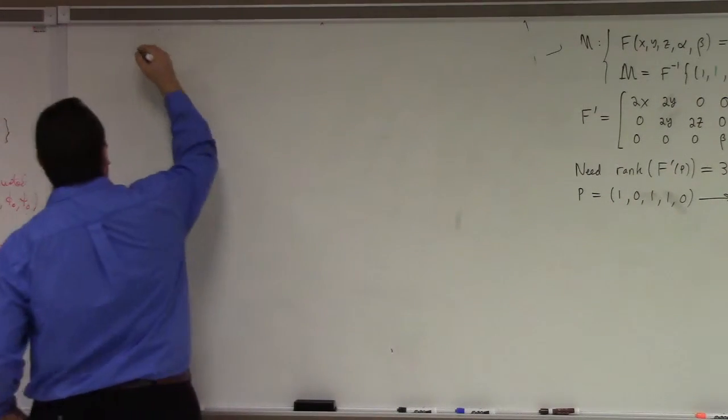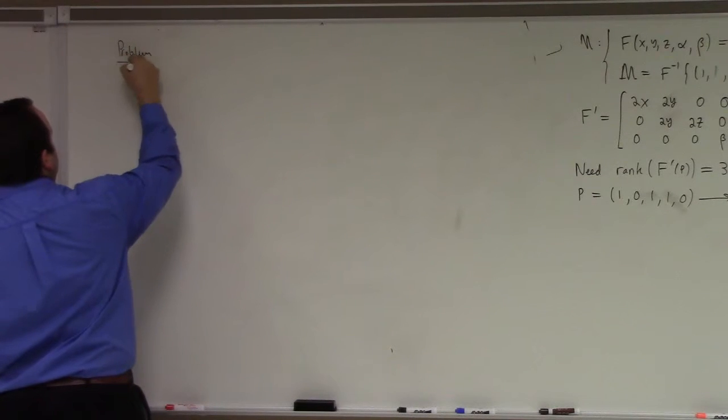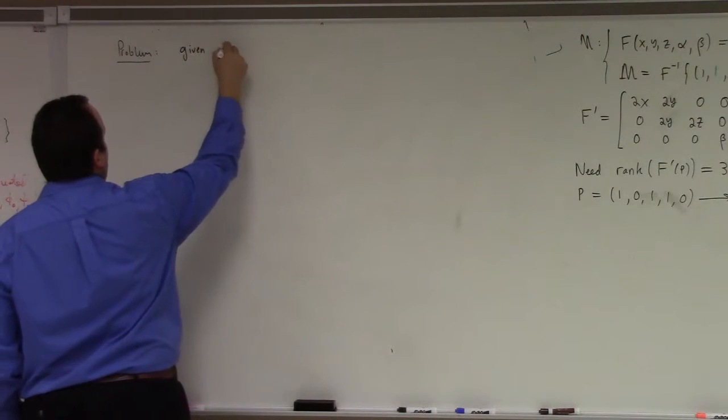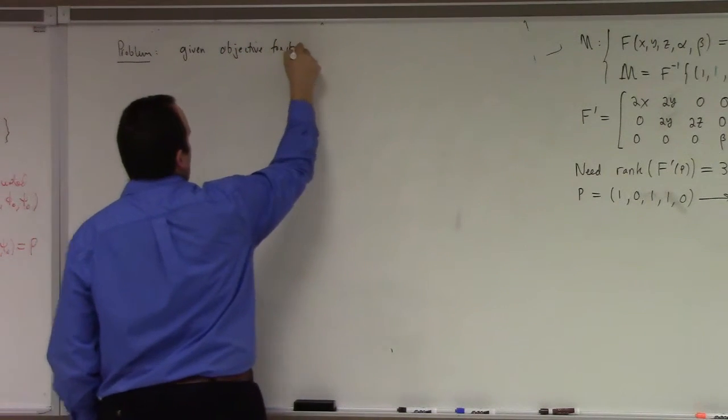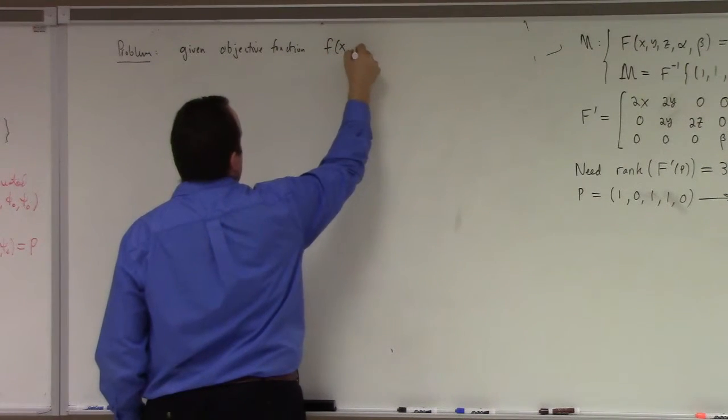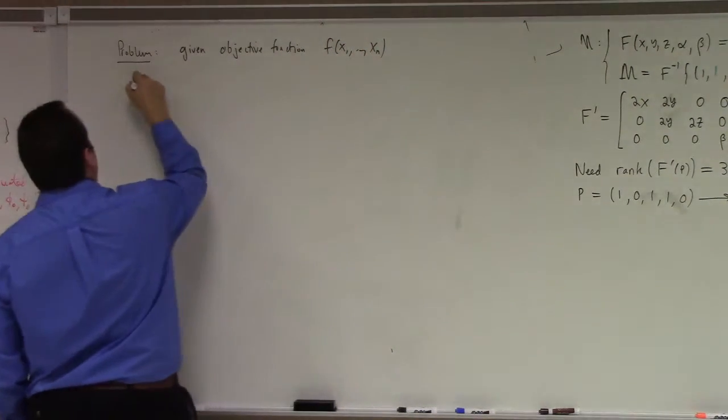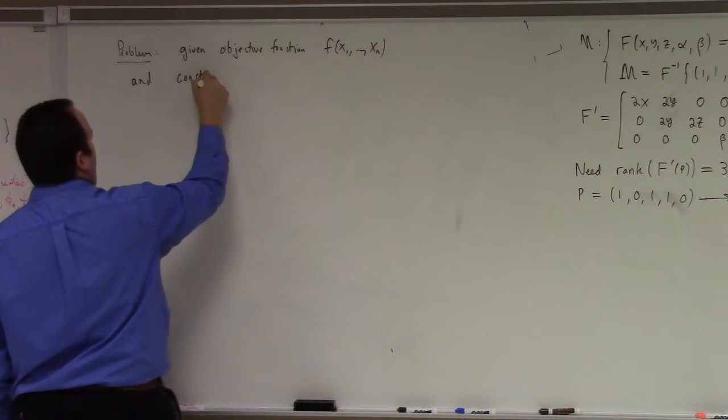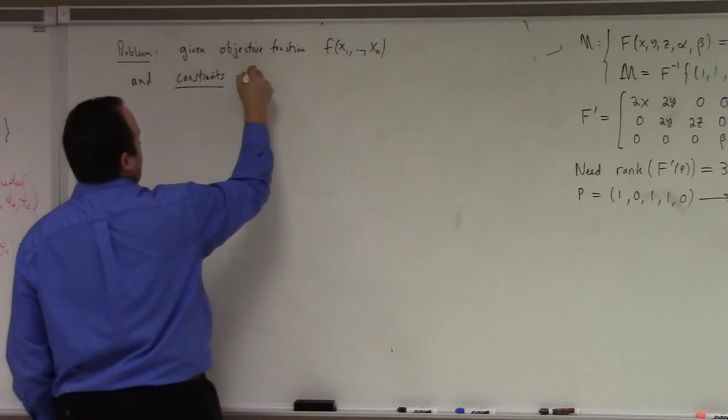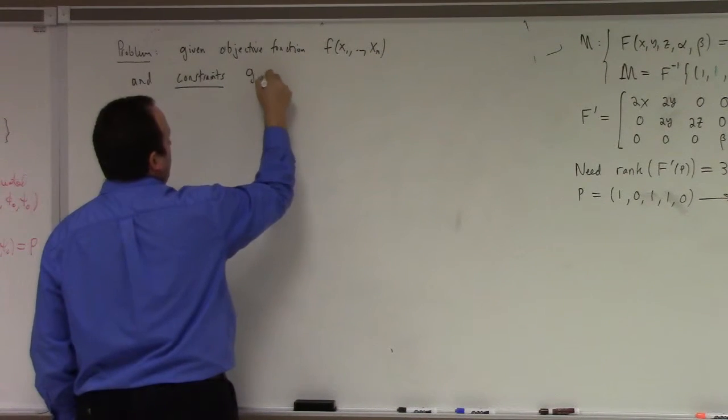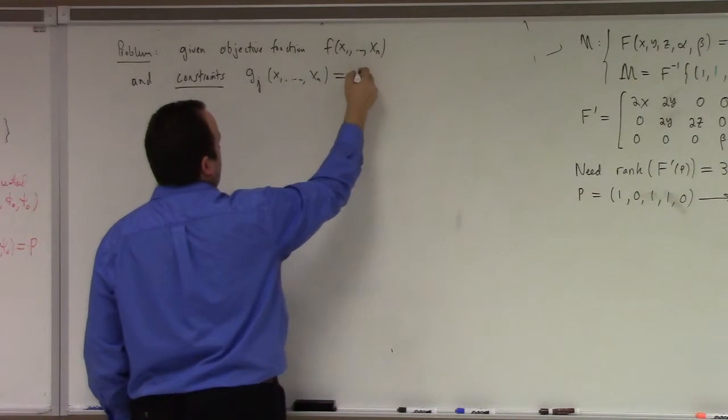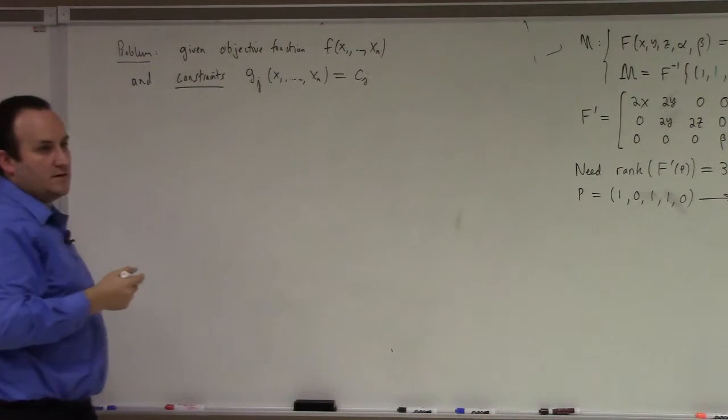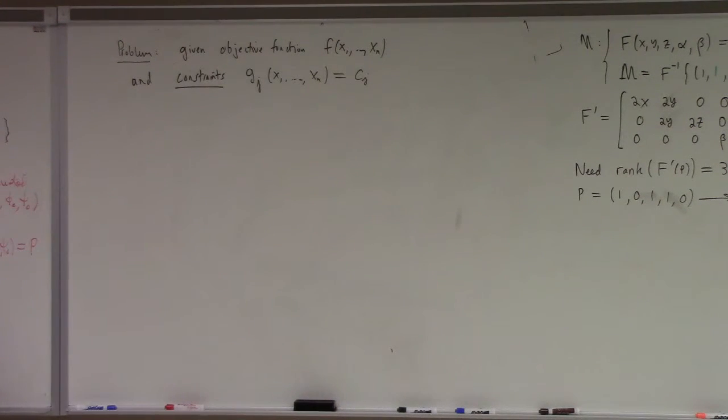So here's the problem of Lagrange multipliers. We're given some objective function, say, f of x1 through xn. And constraints, say, g sub j of x1 through xn equals to some constants. So your goal is to maximize this objective function or minimize it subject to those constraints.